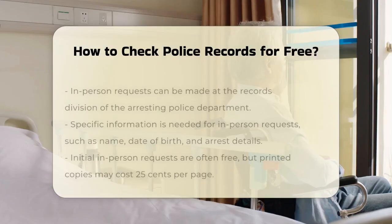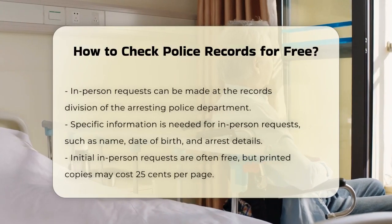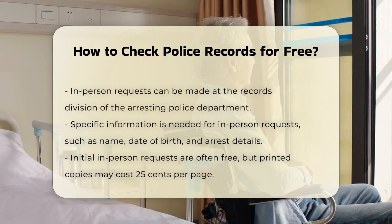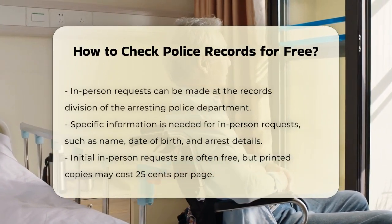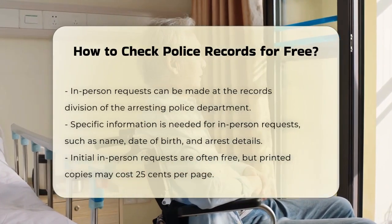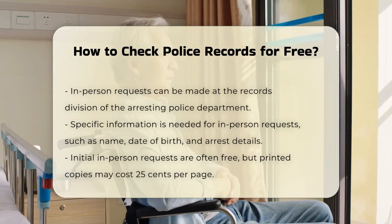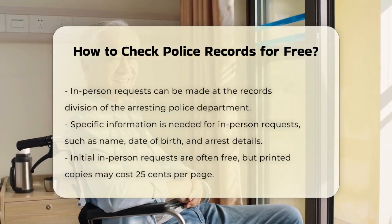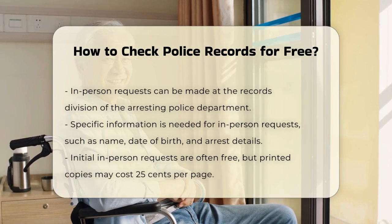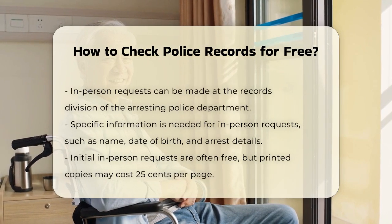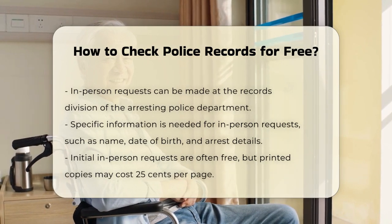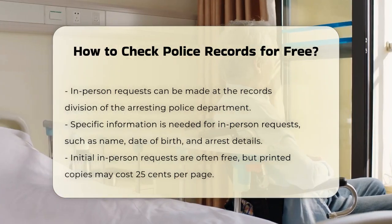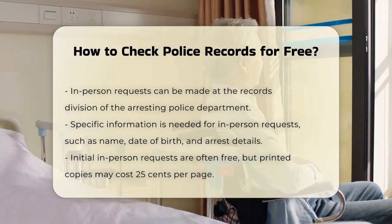In-person requests. You can also visit the records division of the arresting police department in person to request public arrest records. When making an in-person request, you may need to provide specific information such as the arrestee's name, date of birth, arrest number, arrest date, and the arrest precinct or station. While the initial request is often free, there may be a fee for printed copies of the report, typically 25 cents per page.